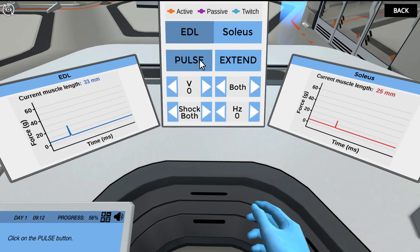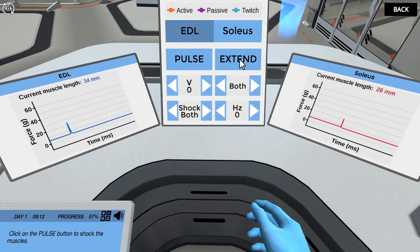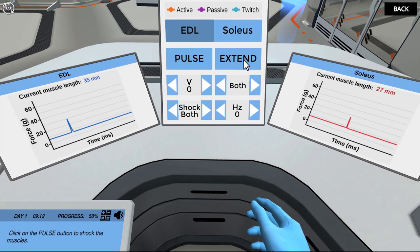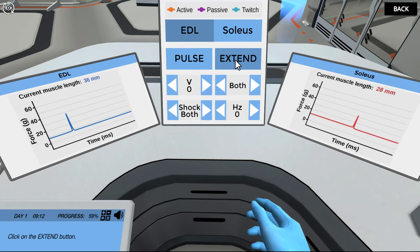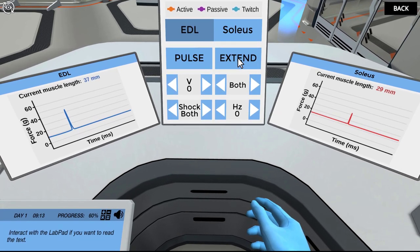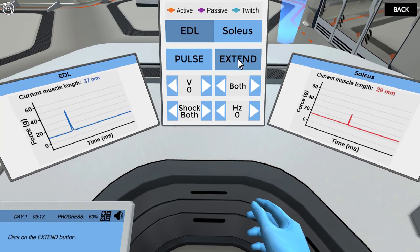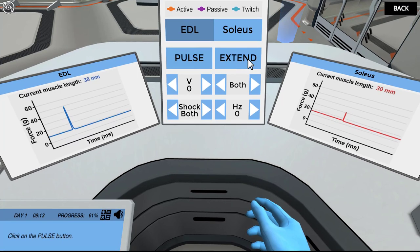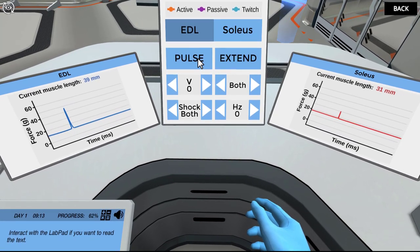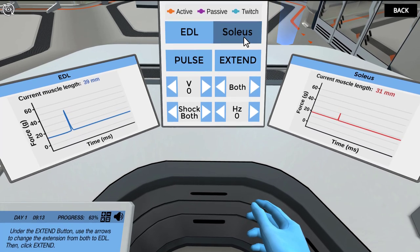Repeat these steps until the twitch force decreases three times. Click on the pulse button. Toggle between EDL and soleus on the control panel to compare the two muscles. Click on the extend button to increase the muscle length. Click on the pulse button to shock the muscles. Click on the extend button. Click on the pulse button. Notice how the two muscle types respond differently to being stretched and shocked. Remember to toggle between the two datasets by clicking on the EDL and soleus buttons. Click on the extend button. Click on the pulse button. Click on the extend button. Click on the pulse button. Awesome, you've reached the point where you want to stop extending the soleus so you don't overextend the muscle. You can see the decreasing force on the soleus trace.